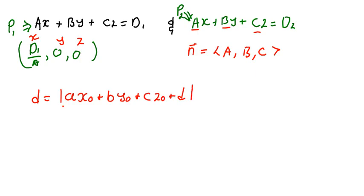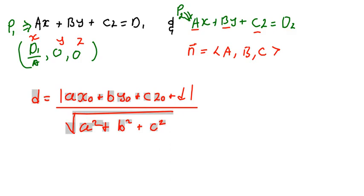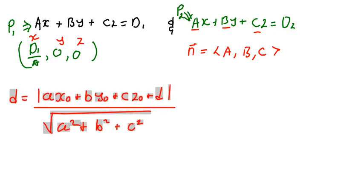Then divide by this radical expression. So here, this is going to be a squared plus b squared plus c squared. This is the formula that we use to find the distance between a point and a plane.